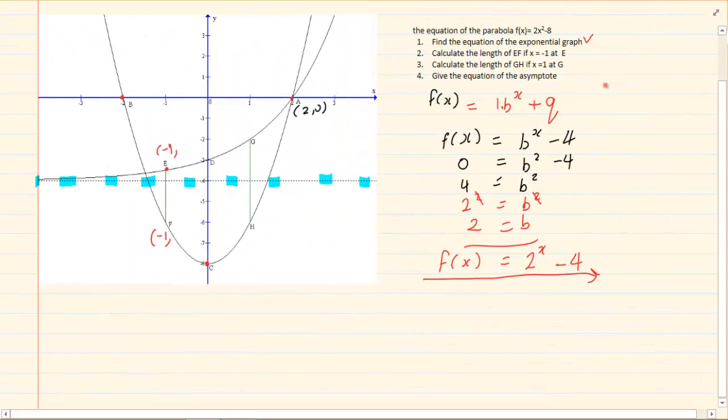Deductions tend to get a bit challenging. You can still say top minus bottom. So if you see which graph is the top? The E graph which is the exponential graph. So we have 2 to the power of x minus 4 minus what is my bottom graph? 2x squared minus 8. That will give us the length of EF.